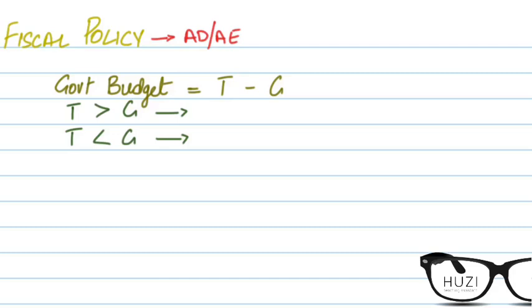We talked about government budget, which is net taxes minus government expenditure. So the government budget is basically how much the government earns through tax revenues and how much the government gives away in the form of government expenditure — such as grants, subsidies, training programs, student grants, and unemployment benefits. When your tax revenue is greater than your government expenditure, it's called a budget surplus.